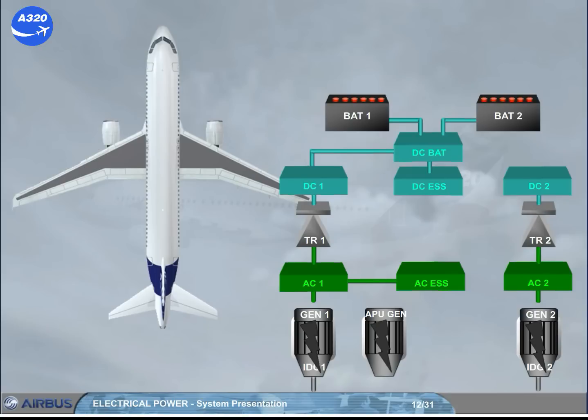On the ground, the AC buses can be supplied by an external power source through the BTC logic. Note, if the APU generator and the external power are connected together to the AC buses, the external power has priority over the APU generator.